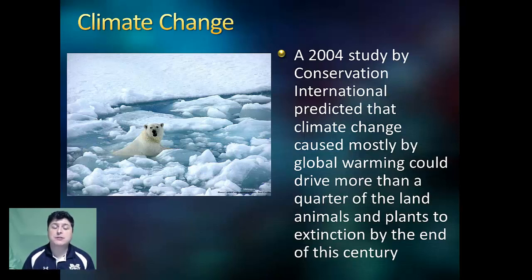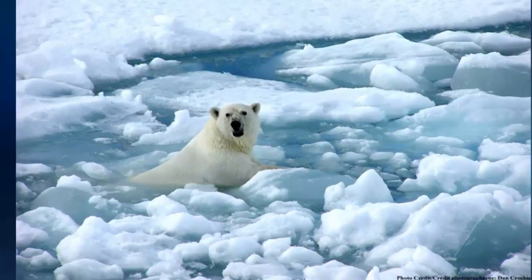A 2004 study by Conservation International predicted that climate change, caused mostly by global warming, could drive more than one-quarter of land animals and plants to extinction by the end of this century. The world's 20,000 to 25,000 polar bears are at great risk. Arctic warming is occurring twice as fast as the rest of the world, and the average annual area of floating summer sea ice is declining and breaking up earlier each year. This means polar bears have less time to feed and store fat needed to survive summer and fall fasting months. Ice shrinkage has forced them to swim longer distances to find food and hunt on land where prey is nearly impossible to find.